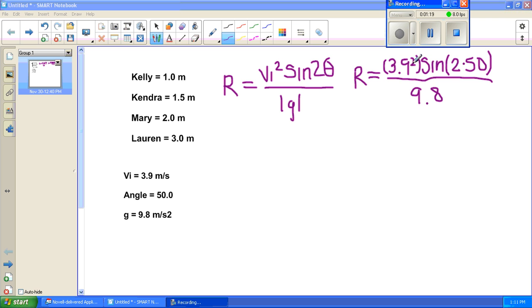We'll put sine, parentheses, 2 times 50, since that's our angle. We'll put the other parentheses and divided by 9.8.